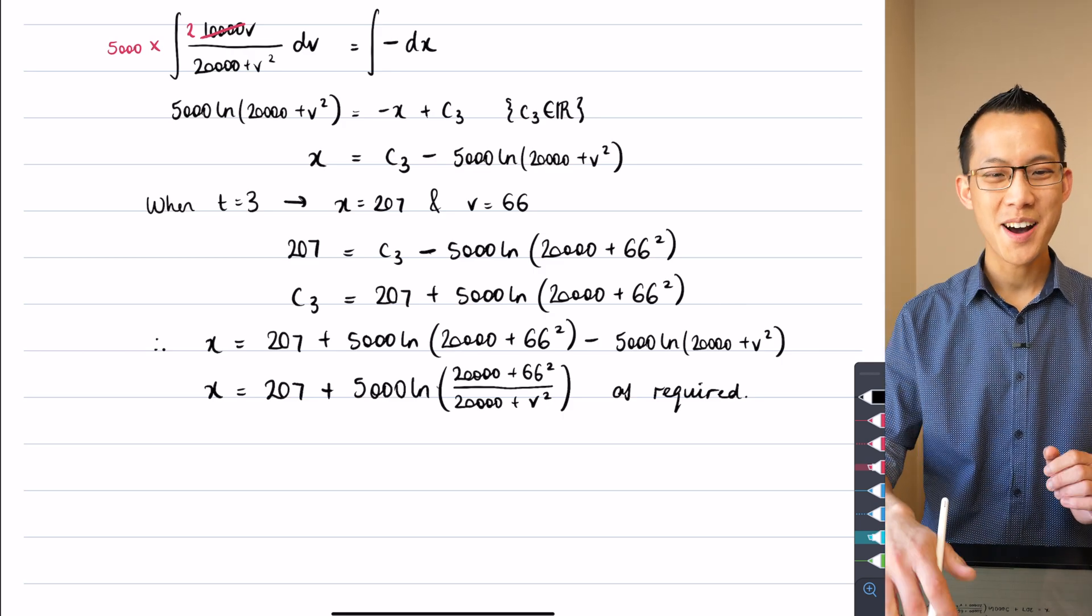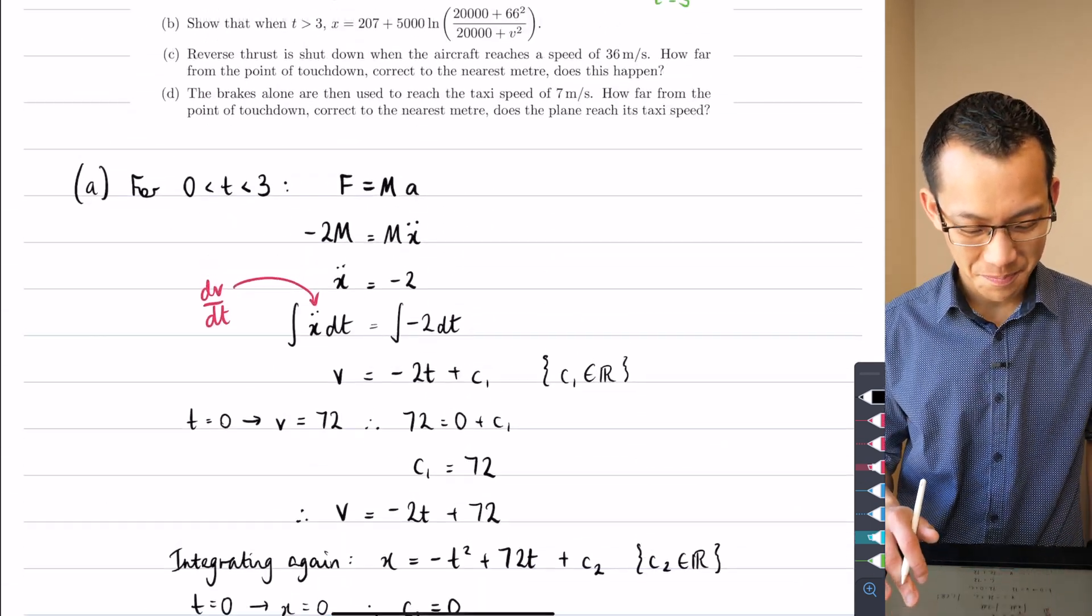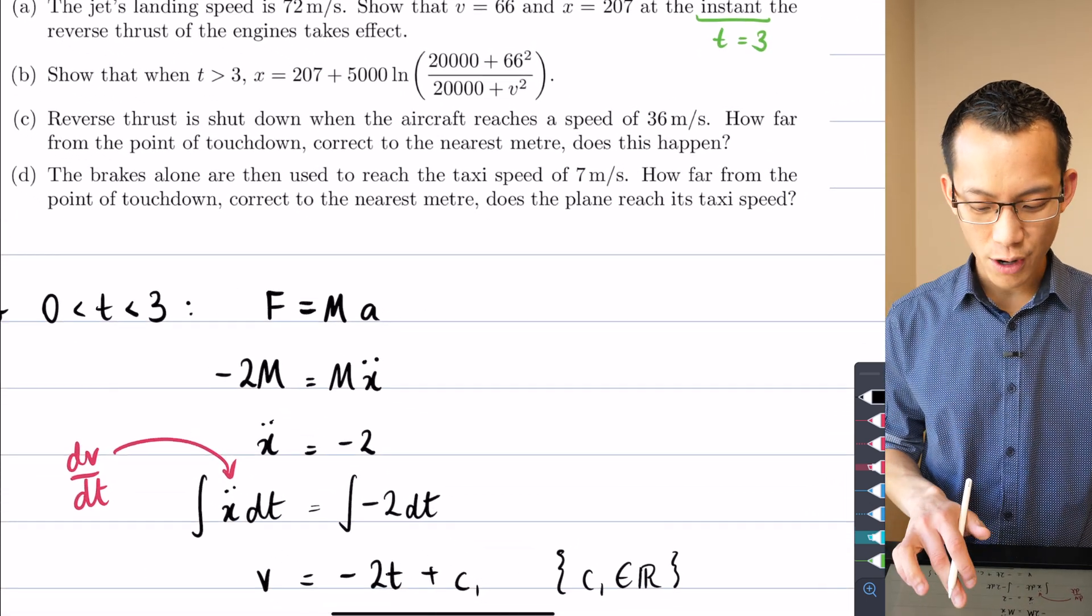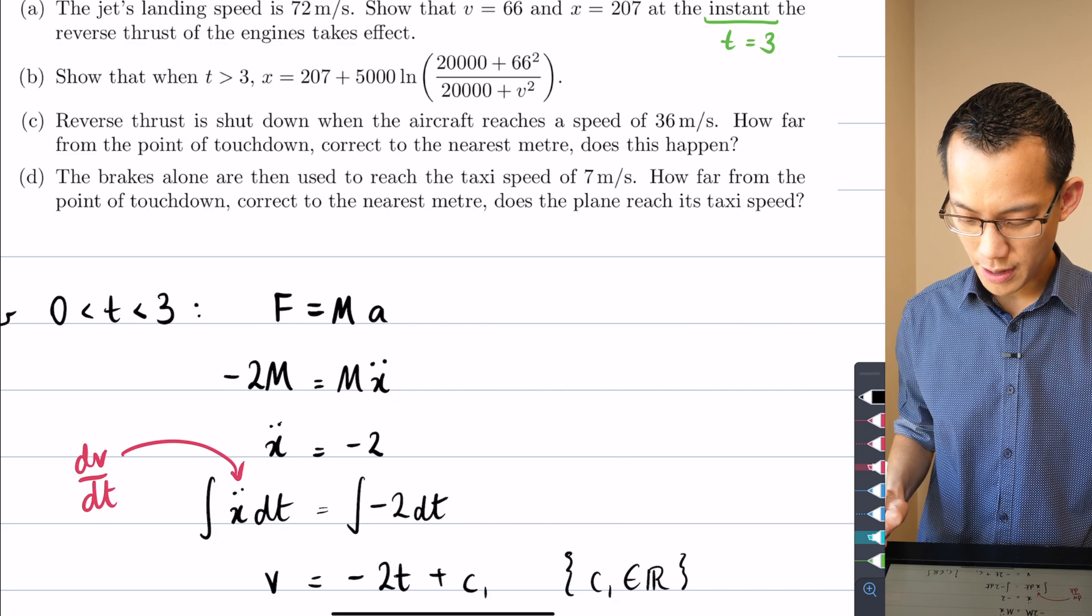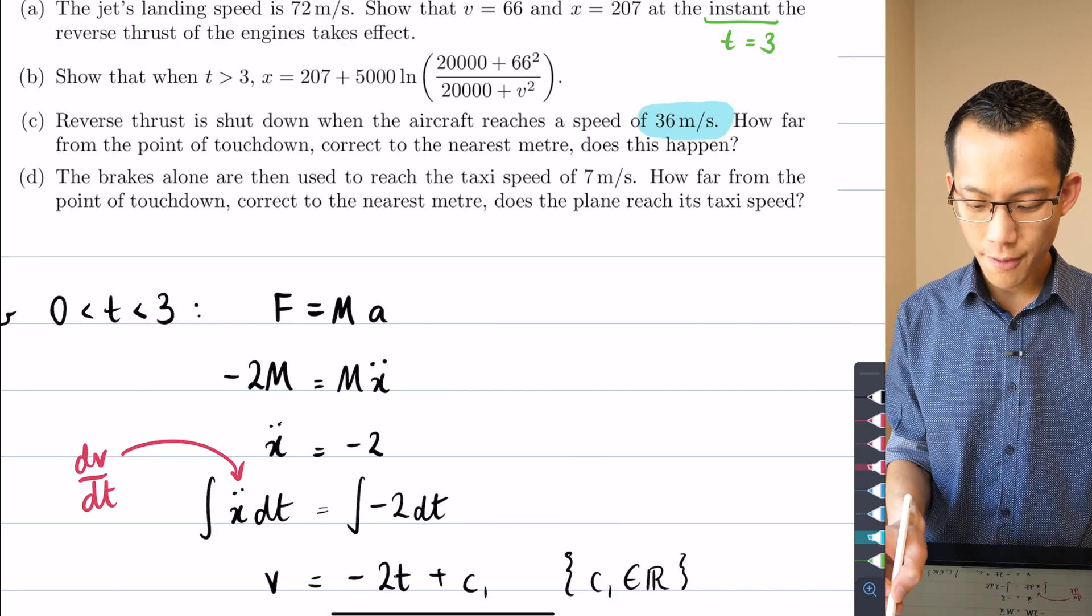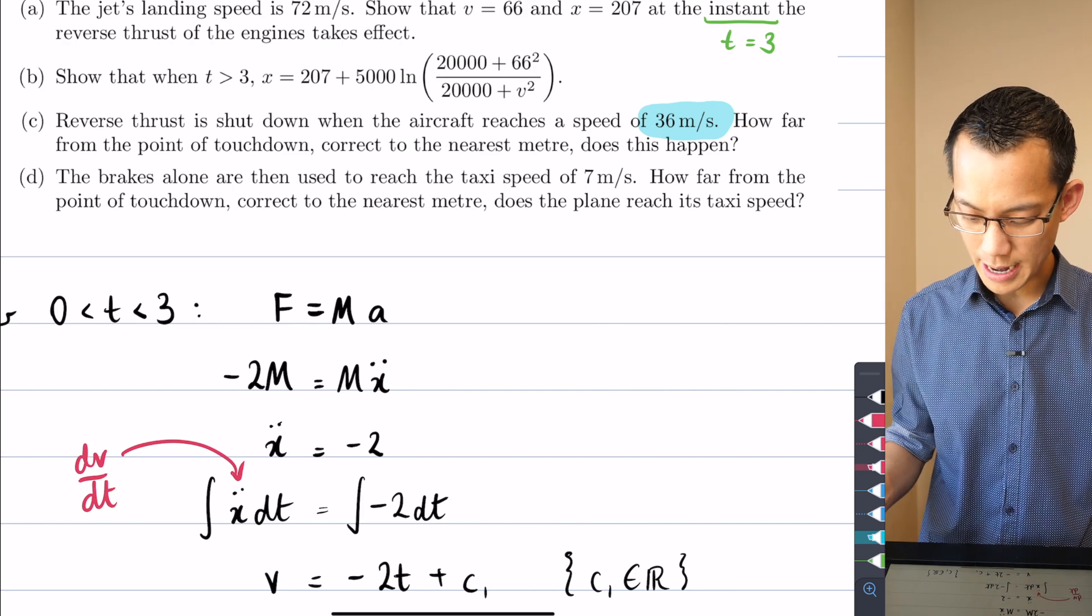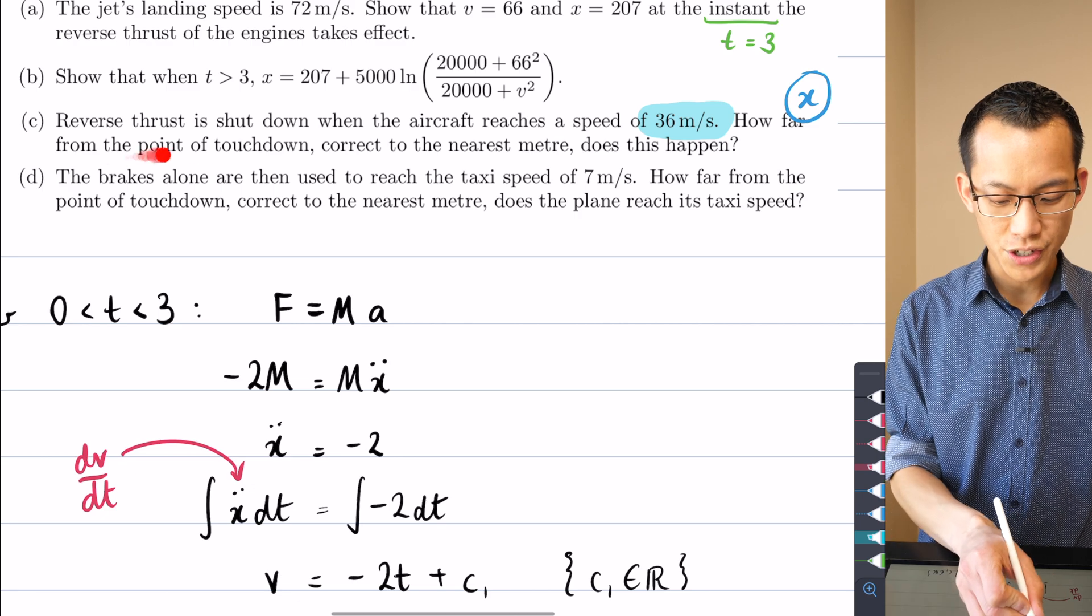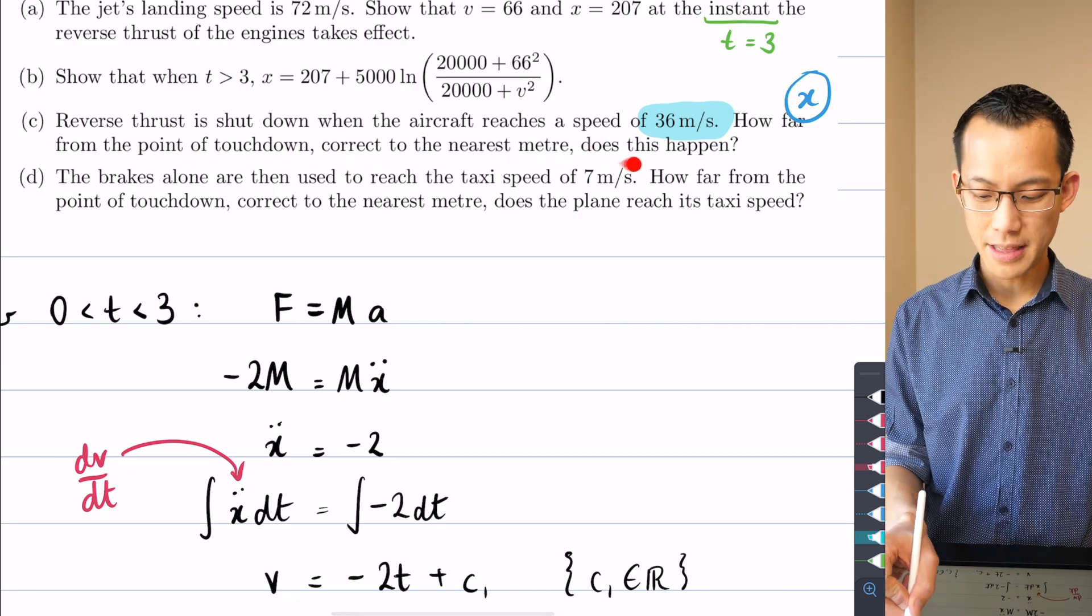Things are looking pretty good so far. What do we want to do next? Part C says reverse thrust is shut down when the aircraft reaches a speed of 36 meters per second. How far? So how far is a displacement question. How far from the point of touchdown, correct to the nearest meter, does this happen?